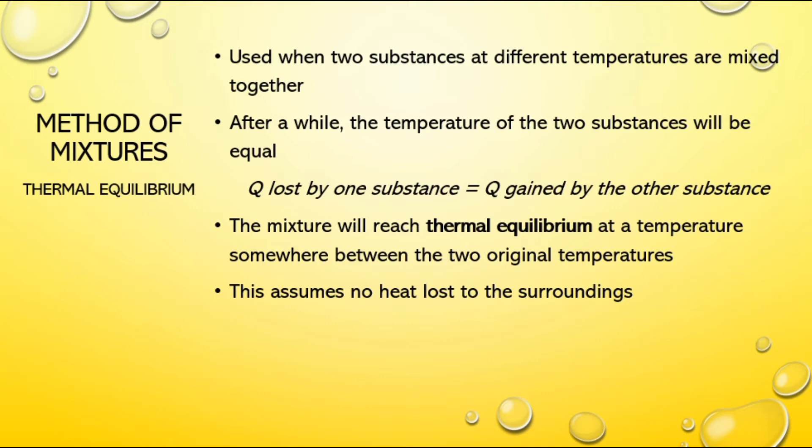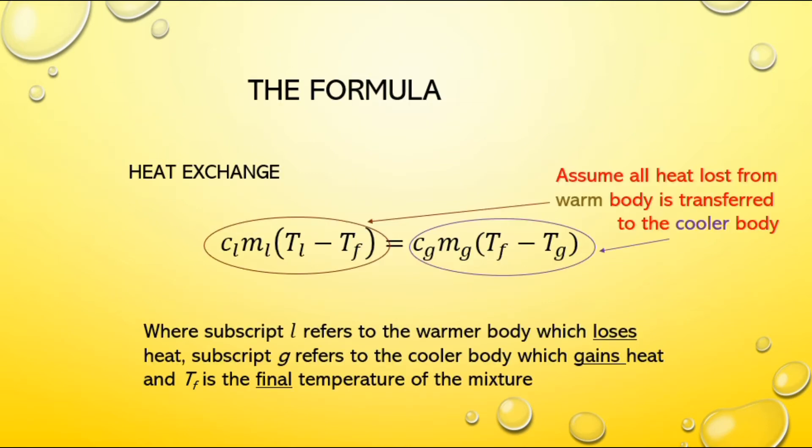That thermal equilibrium temperature is going to have to be somewhere in between the low temperature of one substance and the high temperature of the other. Like if you do this calculation and you get a value higher or lower than your two inputs, something went wrong. This is the formula we're going to base it on. The heat loss by one substance has to equal the heat gained by the other substance. Of course, this is assuming there's no heat loss to the surroundings.